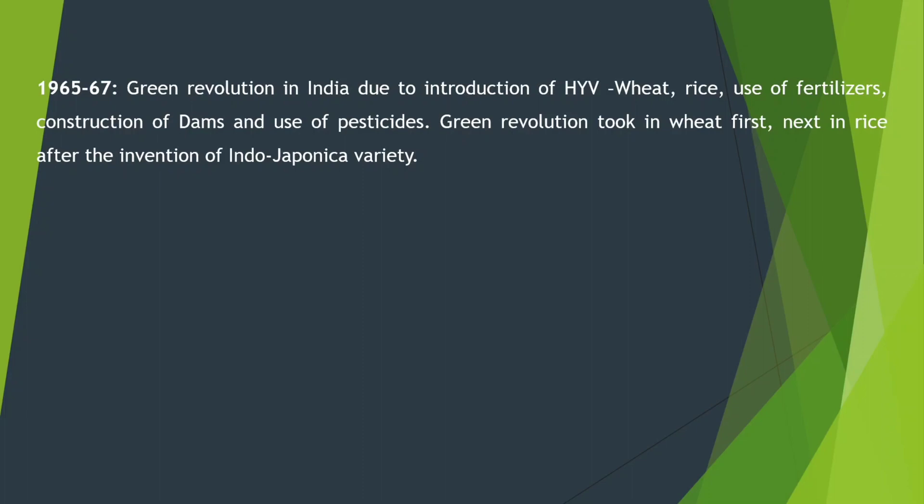Green revolution was first driven by wheat and then rice. The new variety of rice was the Indo-Japanese variety.